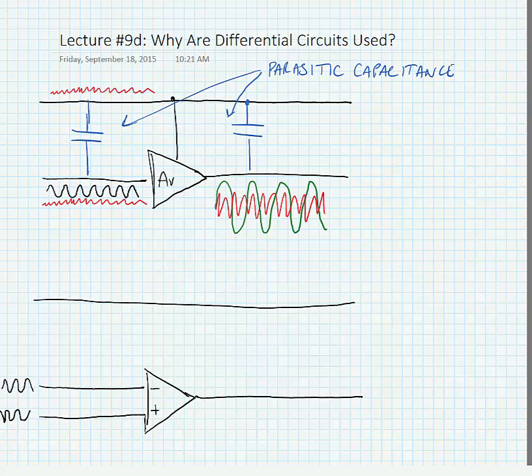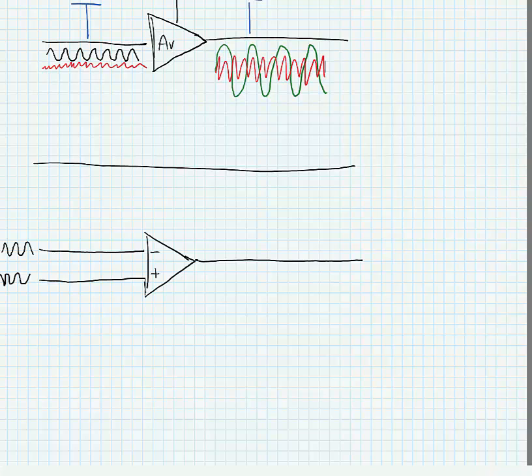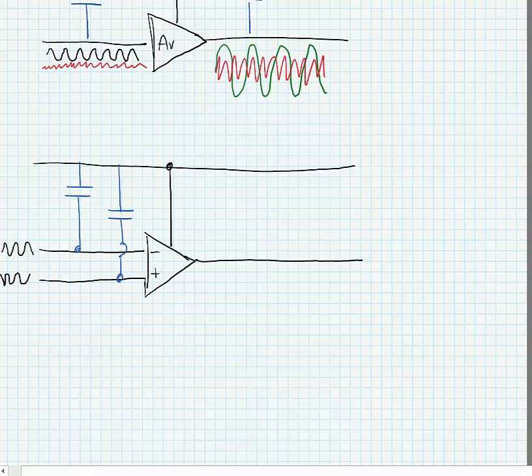Now let's look at the situation if we use a differential amplifier. So we still have the same supply circuit. We have a supply that's providing supply power to the amplifier, and it's also coupling to the input and output through parasitic capacitances.